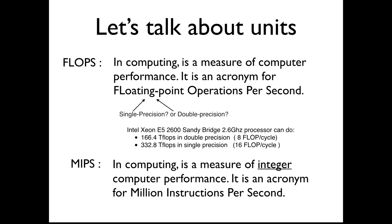Why? Because when you're doing science — solving equations, systems of equations — you're not doing integer operations, you're doing decimals, fractions. And when you look at a microprocessor and how it works, you see that it is much, much easier to do integer operations compared to floating point operations. You can measure that in cycles, actually.